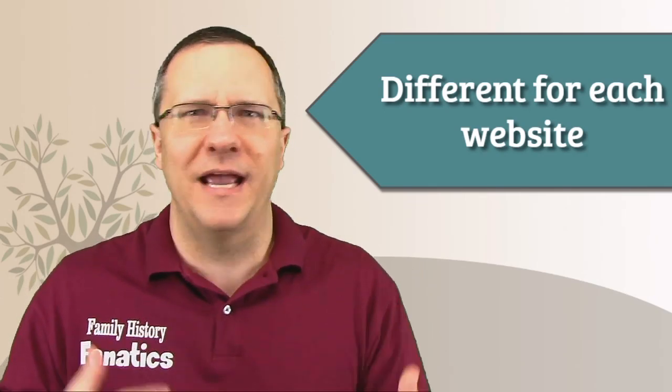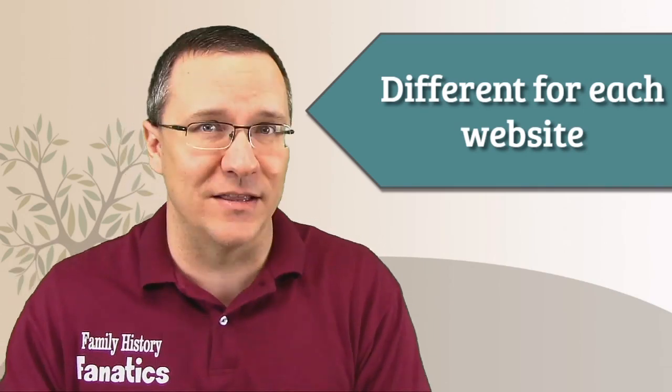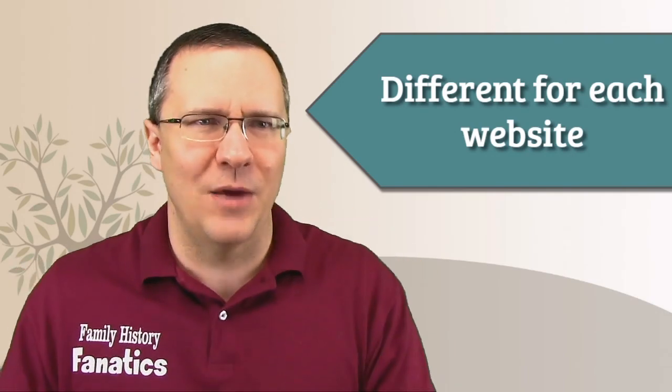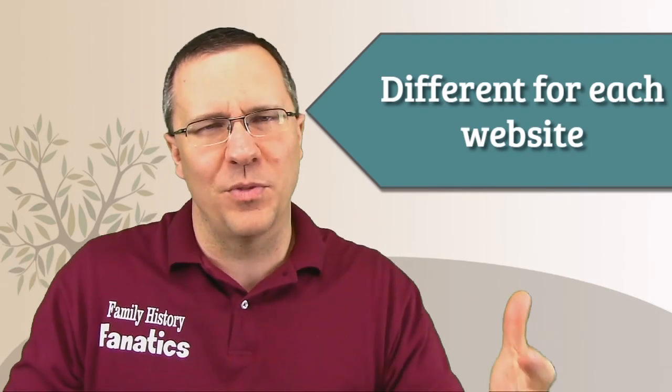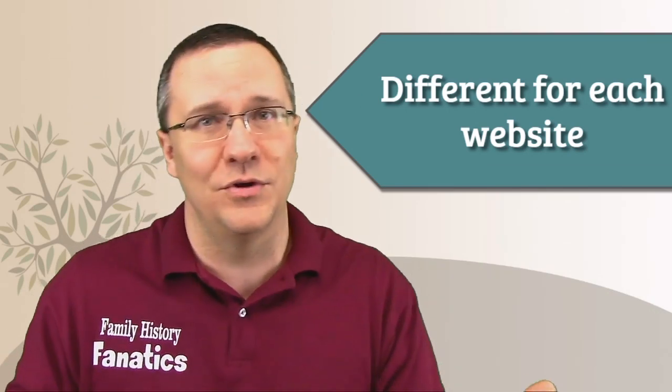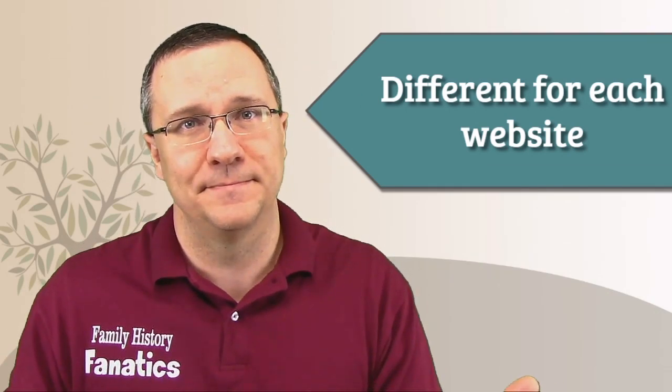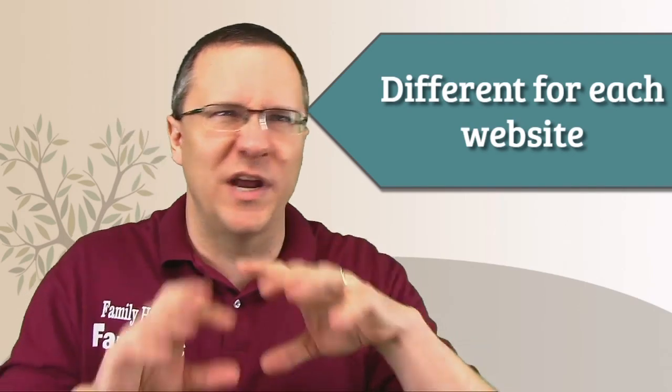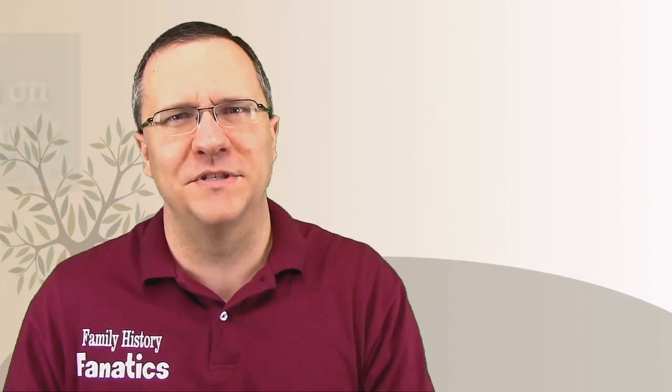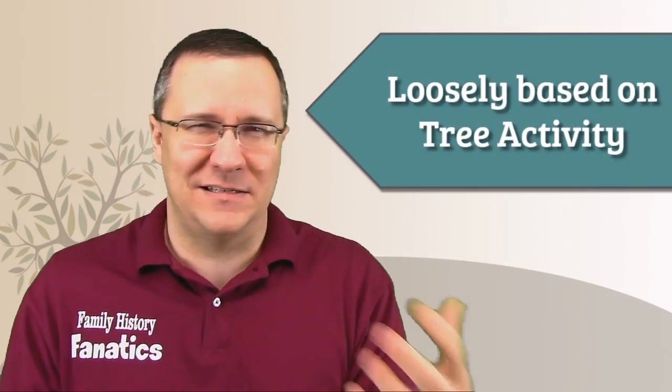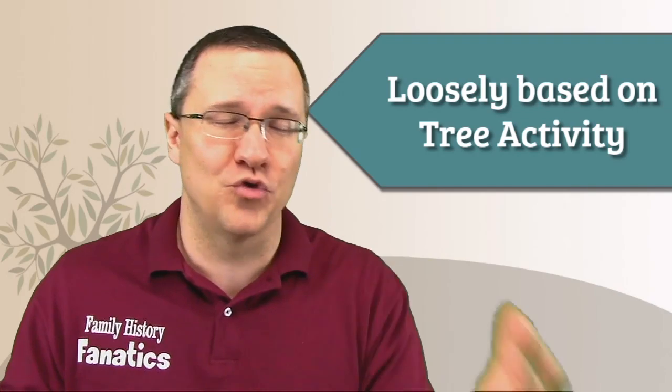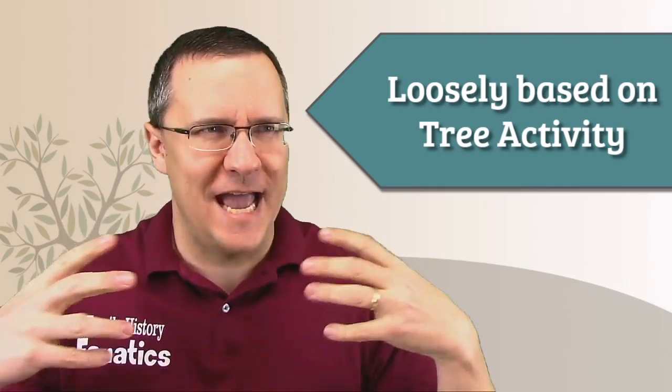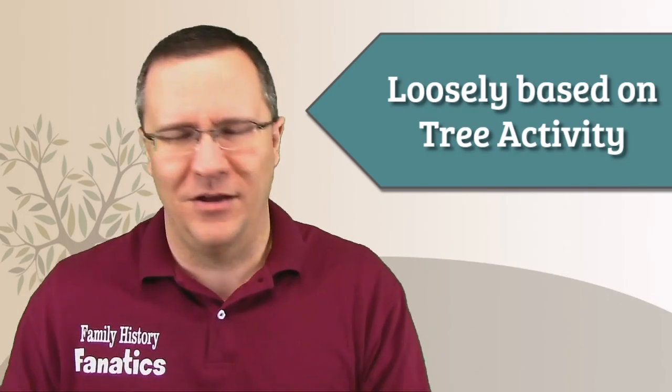For instance, Ancestry and MyHeritage started off as tree websites and the DNA was added later. On the other hand, 23andMe started off as a DNA website and they've had a tree before with MyHeritage and then that was gotten rid of and now they've got a new tree functionality. So you can see that this is actually a little bit difficult to create a criteria between these different websites. And it's really loosely based on tree activity. How many people put trees in and whether or not those trees have enough people that you might be able to find a common match from.